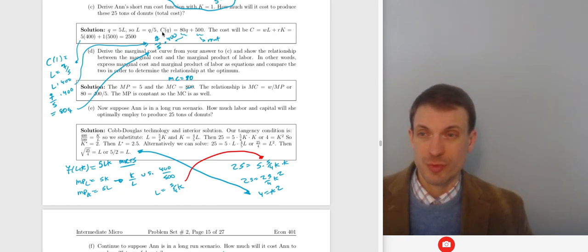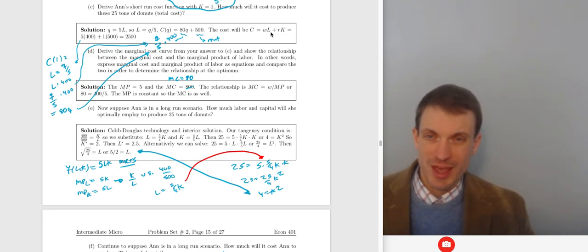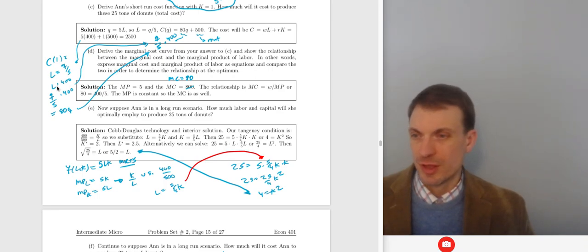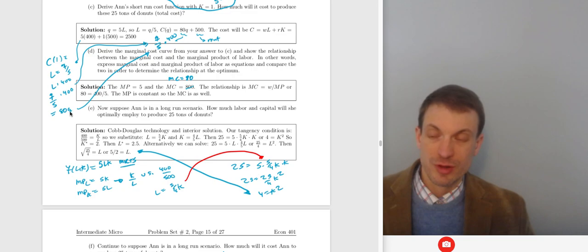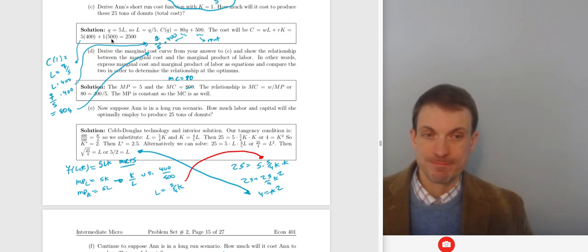We can also write the cost as a function of quantity. Since Q = 5L, we get L = Q/5. Our labor cost is 400 times Q/5, which gives cost from labor equal to 80Q. The 500 is our fixed cost — K = 1 times the rent of 500. So the short-run cost function is C(Q) = 80Q + 500.